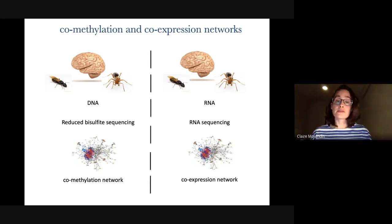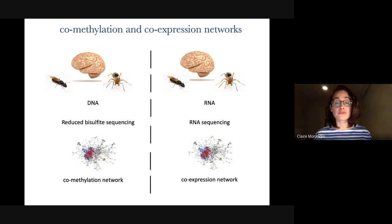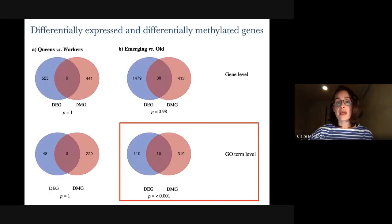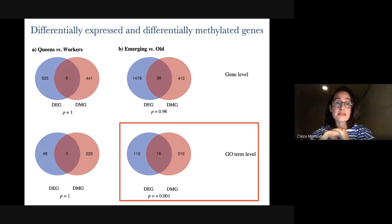We took adults because at the adult stage we have the most genes differentially expressed between queens and workers, so we were looking for a signal. We looked at differentially expressed genes and differentially methylated genes. There were hundreds of genes differentially expressed and differentially methylated. But when we started overlapping these lists, we couldn't find any significant overlap.